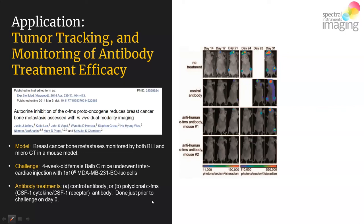In the control antibody setup, there is a similar progression of bone metastatic lesion formation — starting a bit later, but definitely present by day 31. In the test mice given the specific polyclonal antibody against the CSF1 cytokine and receptor complex, you see a variable outcome: bone metastases formed in one mouse by day 28 and day 30, but were really not seen at all in some of the mice.